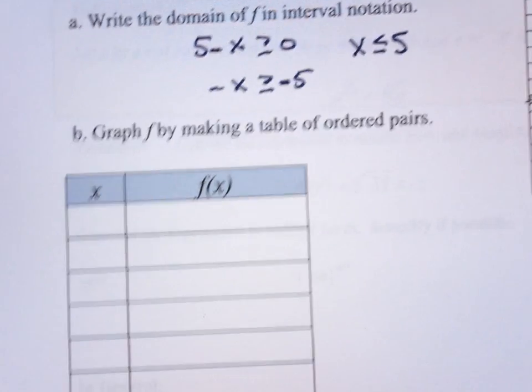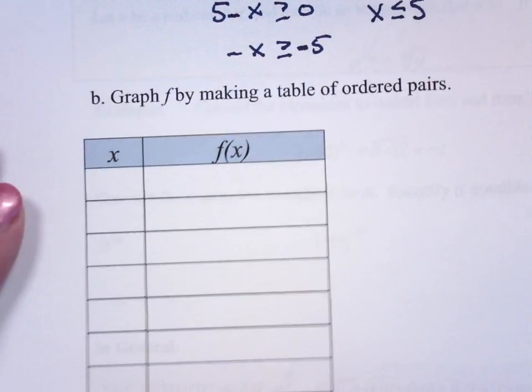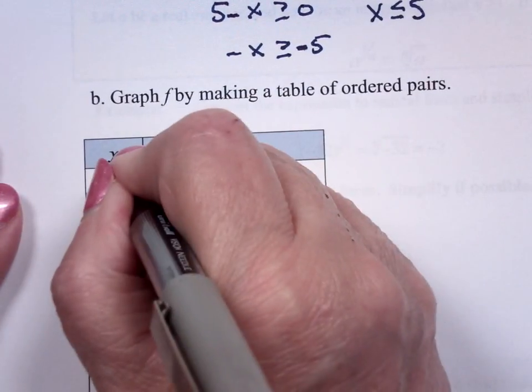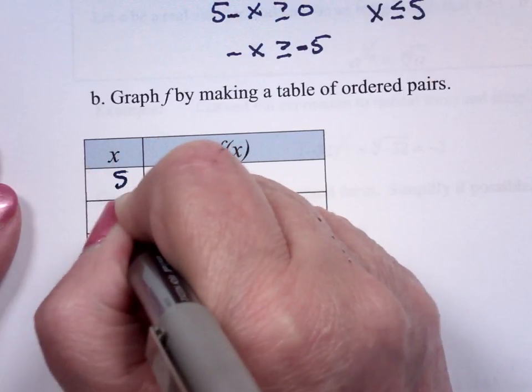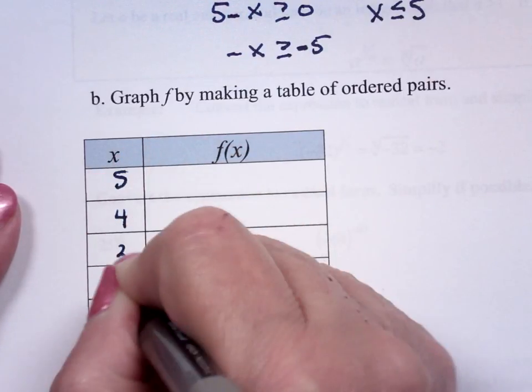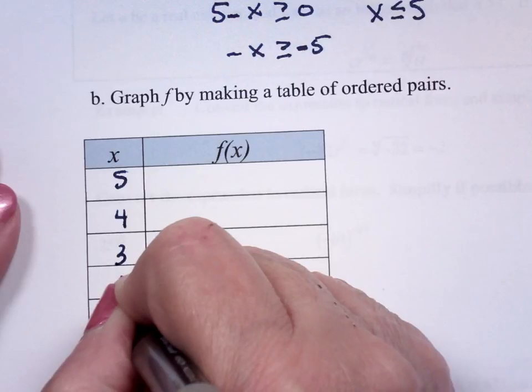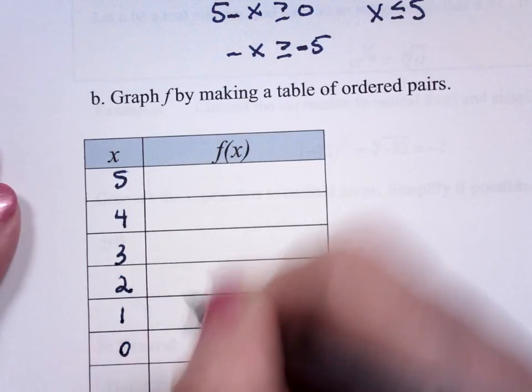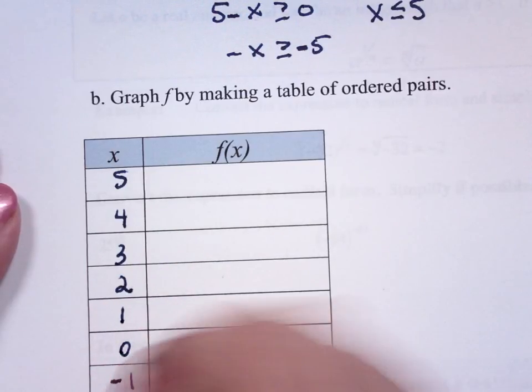So my t-bar chart, I'm going to start at 5 and work my way back. So 5, 4, 3, 2, 1, 0, negative 1.